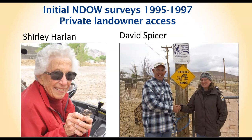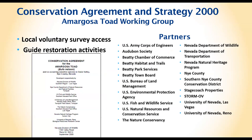Brian Hobbs, Kevin's predecessor, worked with Shirley Harland — a local landowner who had a spring and noticed toads had always occurred there — and David Spicer, a rancher and miner across the valley who also reported large numbers of toads. With access to private lands, they were able to conduct meaningful surveys.